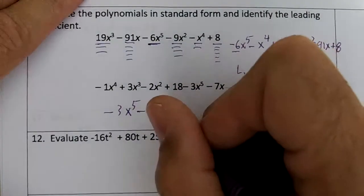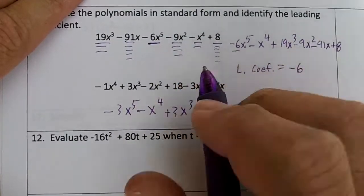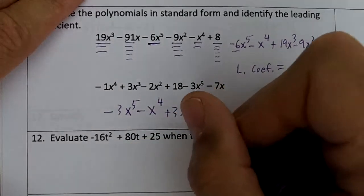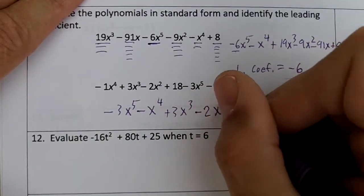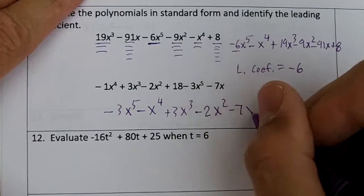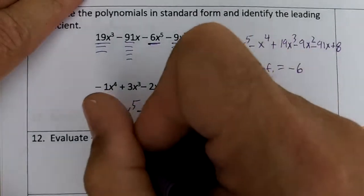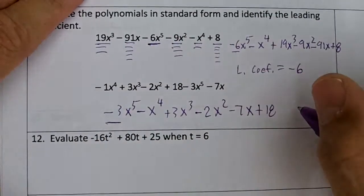The third power would be x to the third, 3x³. We have a squared, so minus 2x². We have an x minus 7x and then plus 18. The leading coefficient would be negative 3.